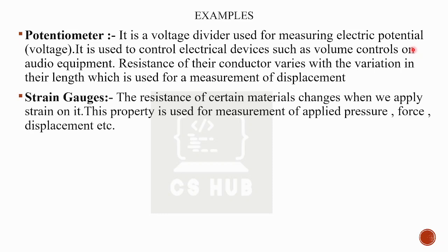The next category is the strain gauge. The resistance of certain materials changes when we apply strain on it. When we apply strain — that is, pressure on the material — the resistance changes. We use this to measure pressure, force, and displacement. Strain gauge is applied using this change in resistance.